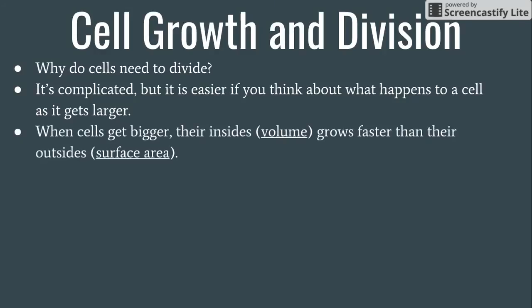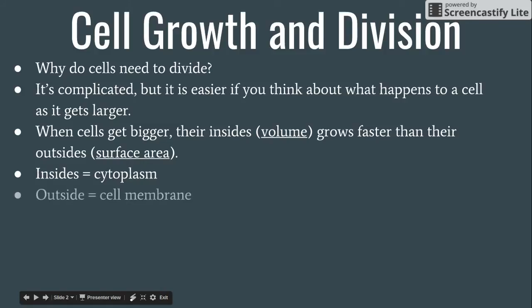There's two things you have to think about. As a cell gets bigger, their insides, which we refer to as their volume, grows faster than their outsides, the surface area. I'll put these in terms that make sense from what we studied two chapters ago when we were studying cell structures. The insides are the cytoplasm. Remember, that's the liquid part that makes up the inside of the cell. The outside is the cell membrane. So we're seeing that the cytoplasm makes up the volume, the cell membrane makes up the surface area.